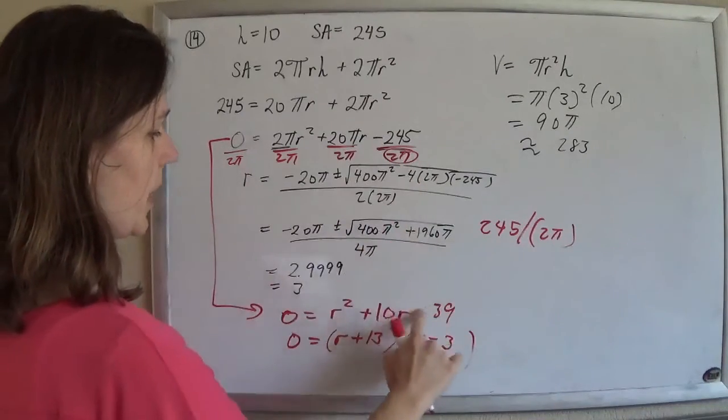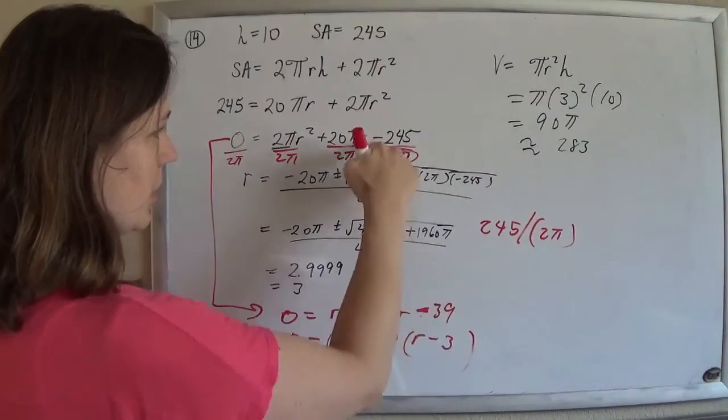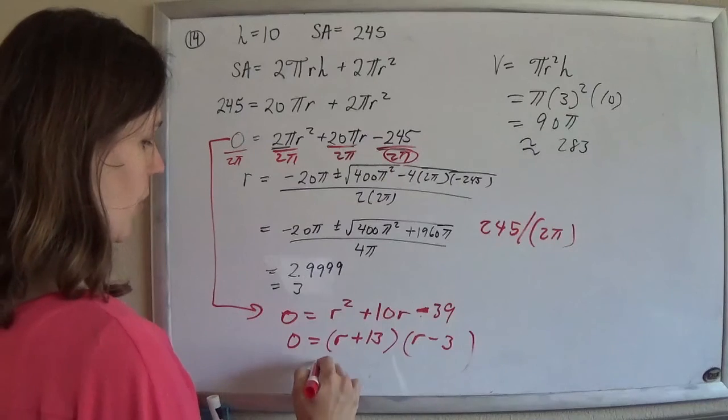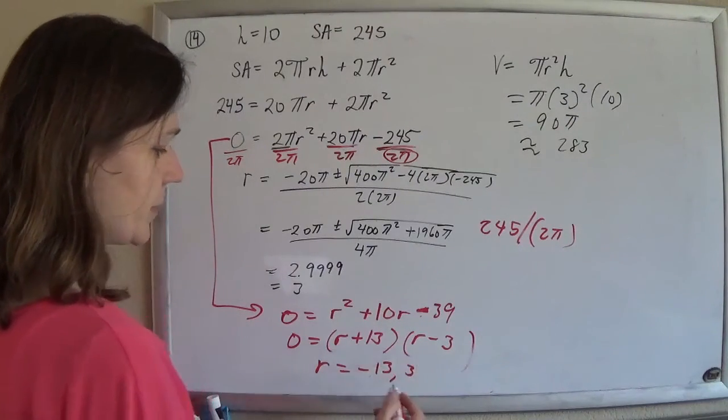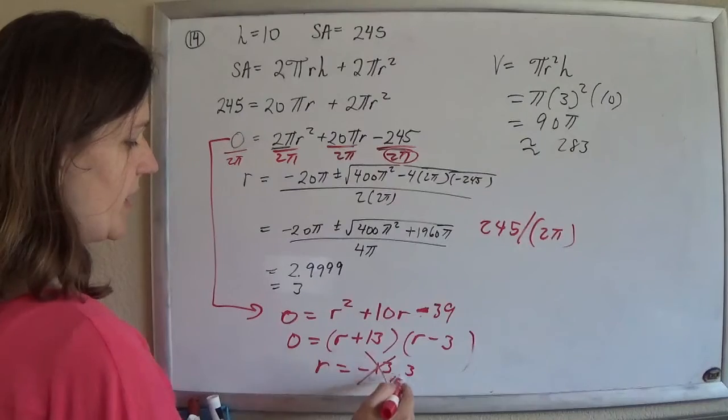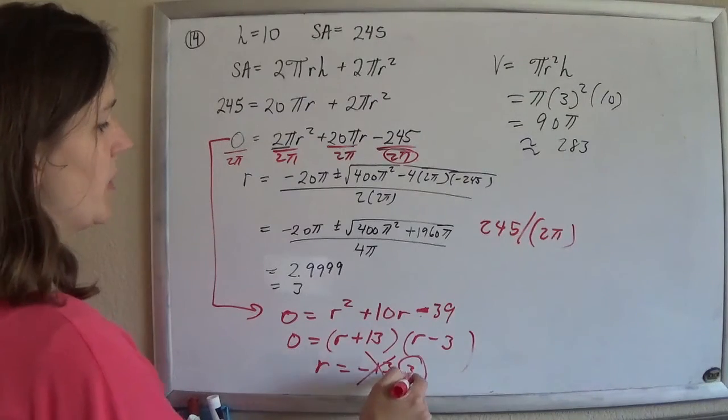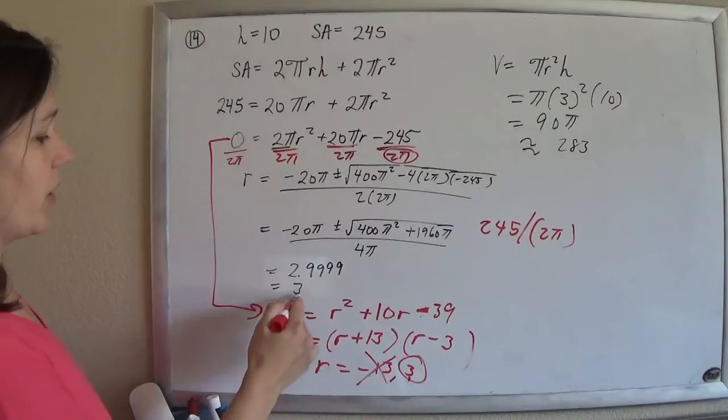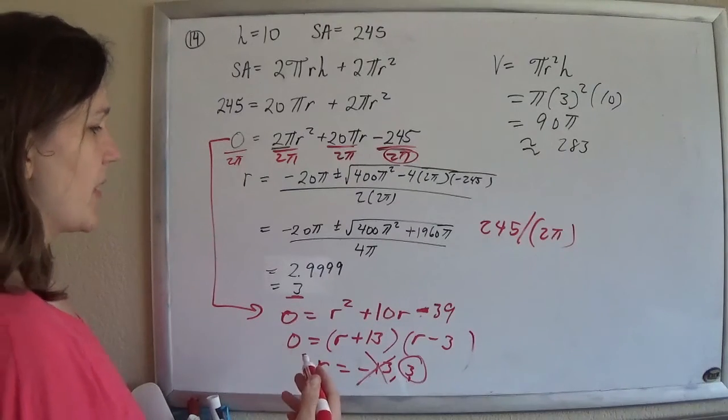This was supposed to be minus, my bad. Just lost that sign. So r could be minus 13 or 3, and so, of course, the radius can't be negative, so it's 3, which is the same thing we got earlier. So there's that.